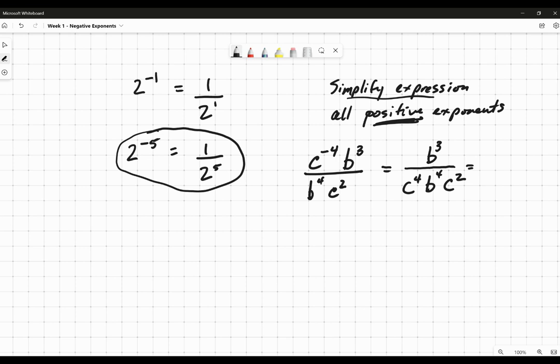That's not simplified because we can combine the c's with the exponents in the denominator. Using our rule, that becomes c to the 4 plus 2. So that's c to the 6th times b to the 4th.